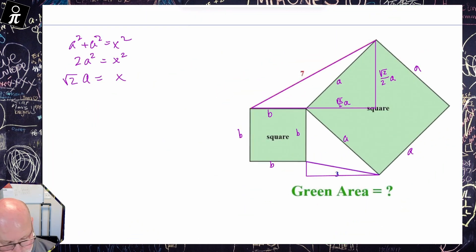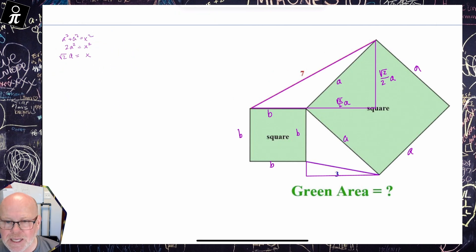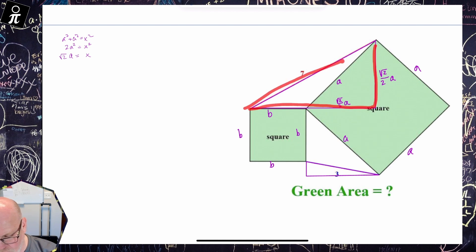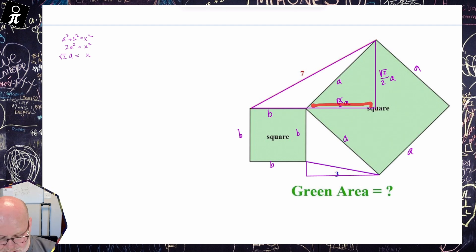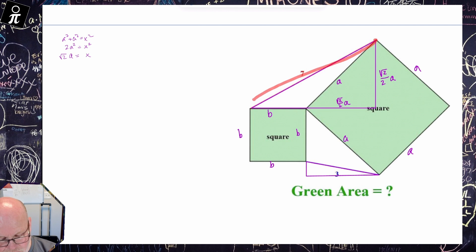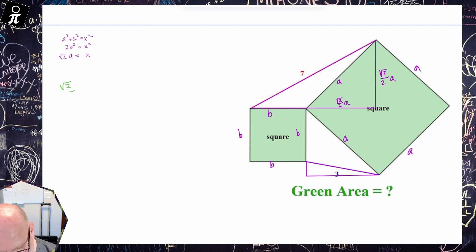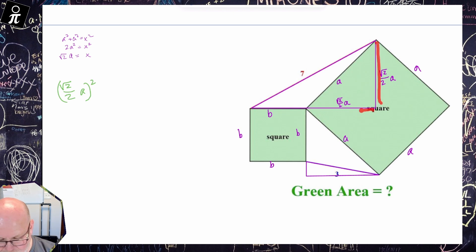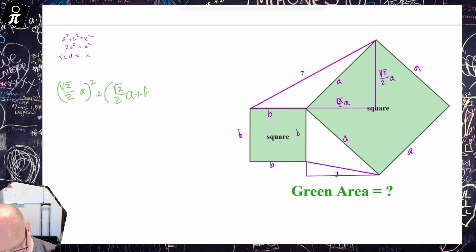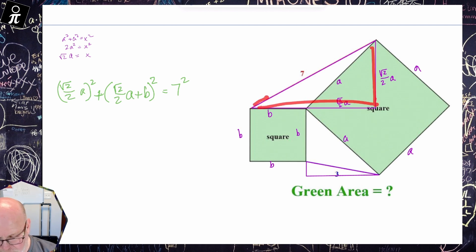That means this length right here is √2/2·A. Now I can see that we have enough information to start putting things together. We've got this leg equal to √2/2·A, and then this other length is an addition statement: it's √2/2·A plus B. Our hypotenuse is 7. So we're going to have (√2/2·A)² plus (√2/2·A + B)² equals 7 squared.